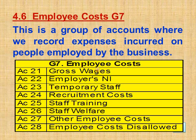Section 4.6 Employee Costs, Group 7. This is a group of accounts where we record expenses incurred on people employed by the business. This includes gross wages, employers national insurance, temporary staff, recruitment costs, staff training, staff welfare, other employee costs, plus employee costs disallowed.